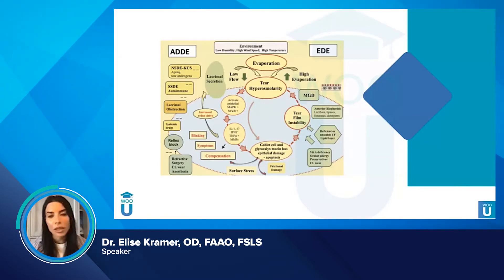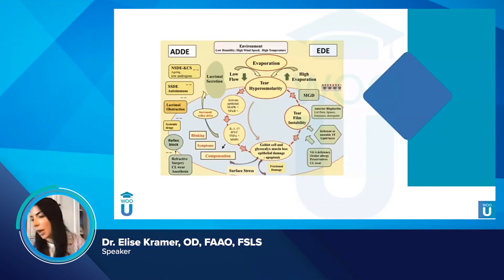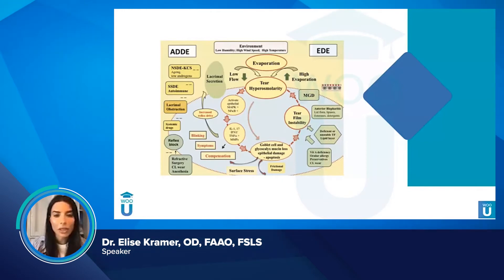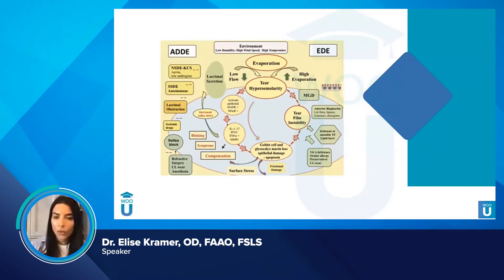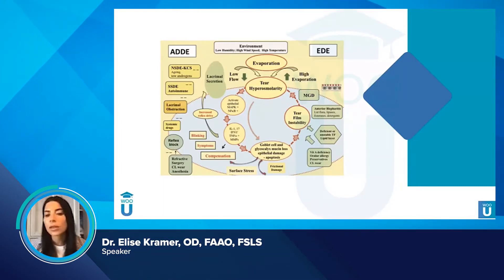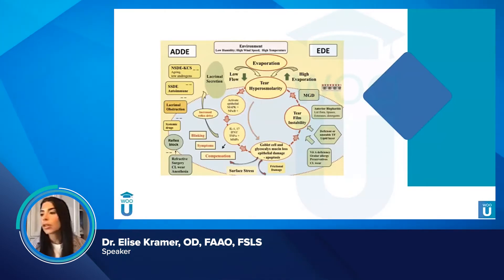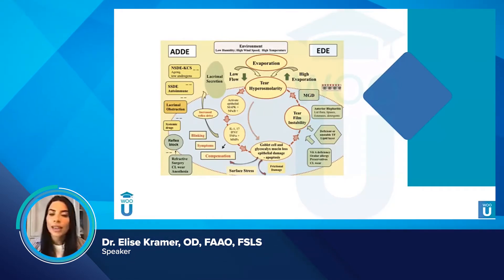In evaporative dry eye there's excessive evaporation of tears, while in aqueous deficient dry eye there's normal evaporation but not enough tears — low flow. Either way, whether high evaporation or low flow, you get increased tear film osmolarity, which leads to tear film instability, which leads to inflammation and the release of inflammatory mediators, which leads to symptoms and signs — a vicious circle that just gets worse if untreated.